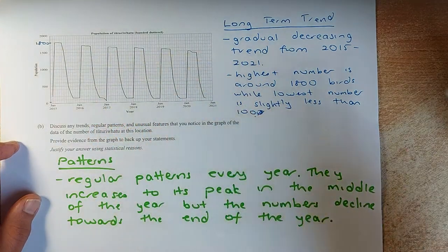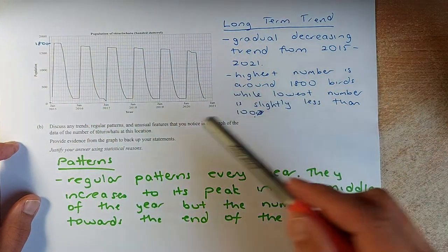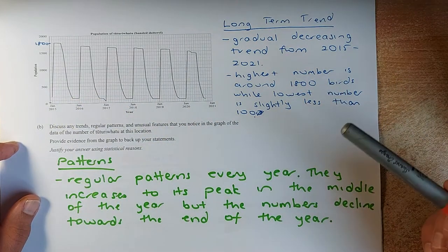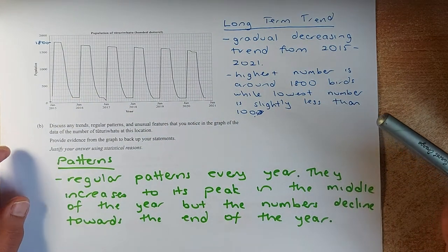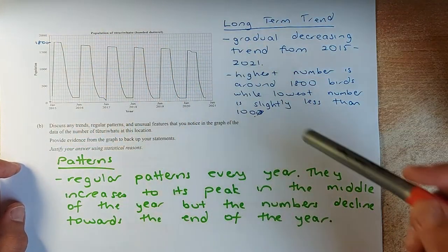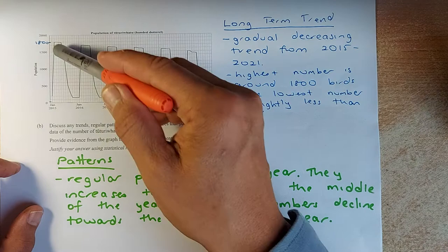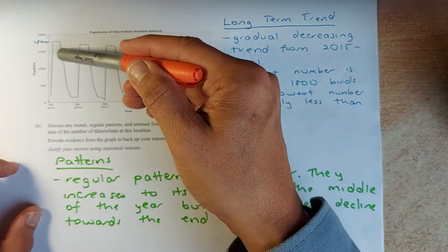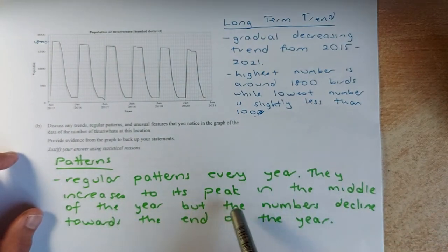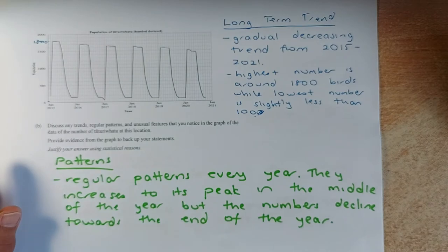You can see it's going down. The highest number is around here, 1008, and the lowest number here is less than 100. So you can put it down in the long term trend. What about the patterns? They seem to be a regular pattern every year. They tend to increase in the middle of the year and go down at the end of the year. So you can put it down in the pattern that they increase to the peak in the middle of the year, but the numbers decline towards the end of the year.